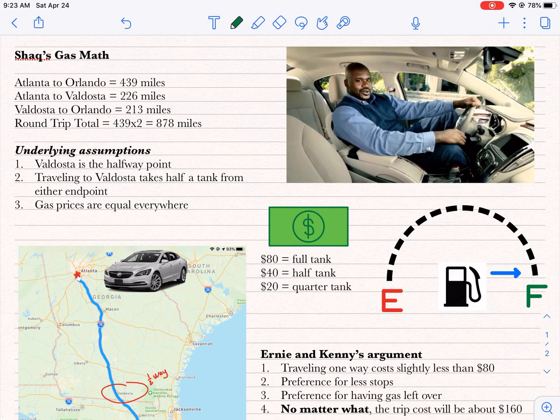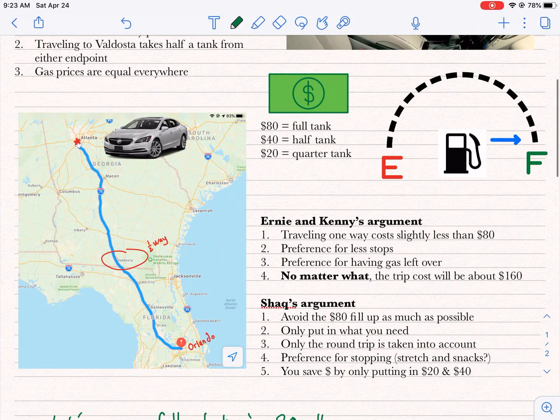Shaquille O'Neal has a certain argument, Ernie and Kenny have another argument, and I'm going to break it down in the latest example, which is driving from Atlanta to Orlando.